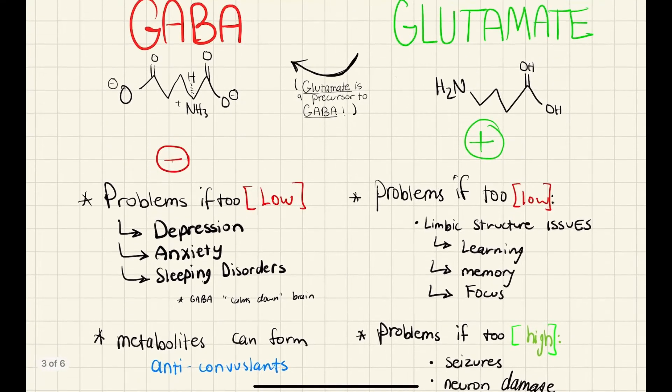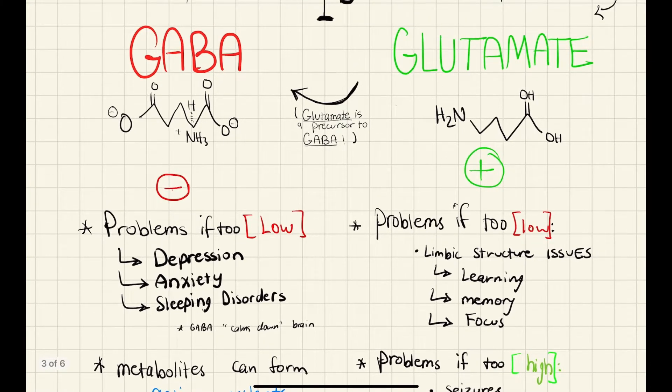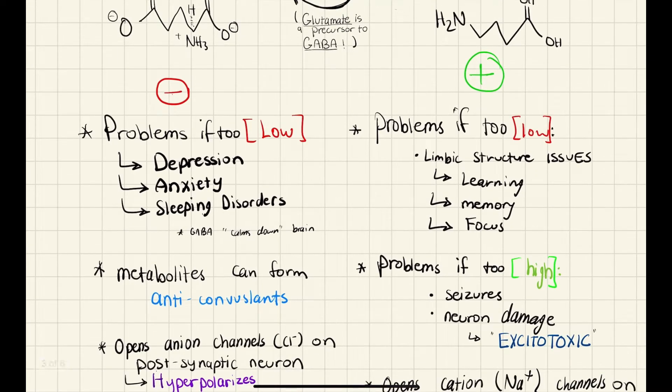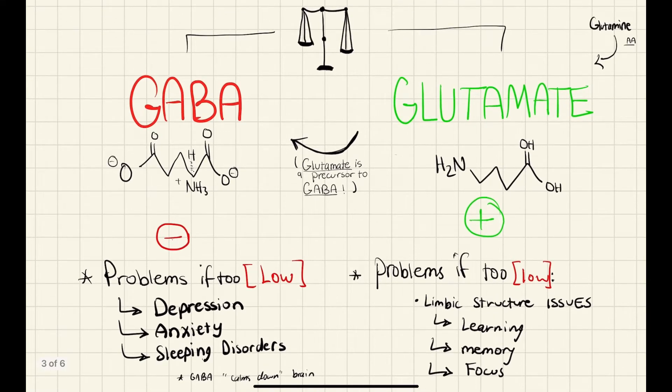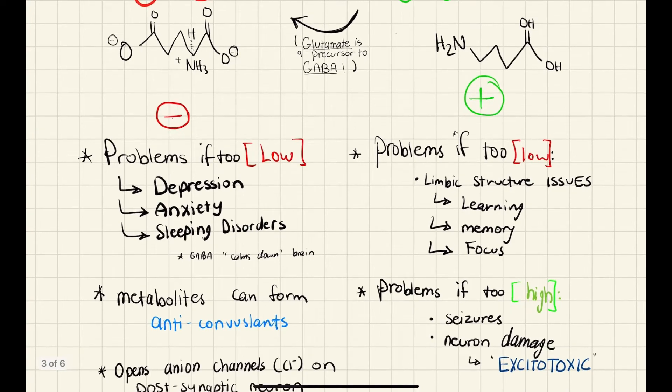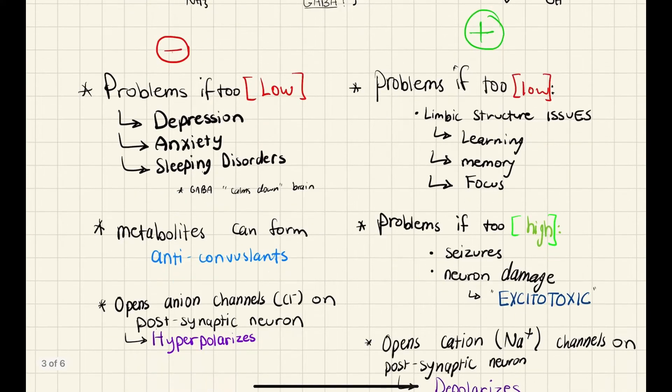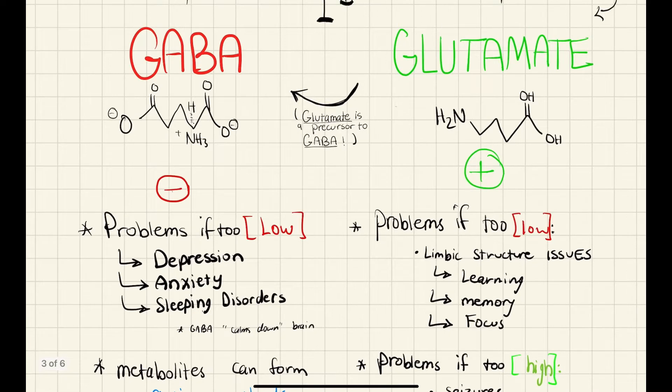Now, if you have too low glutamate, you could get limbic structure issues like issues with learning, memory, and focus. Because glutamate is essentially in the hippocampus for strengthening synapses in response to memory. But if it's too high, you can also get seizures or neuron damage, which is excitotoxicity, which I will explain more about in a future video. But it basically causes too much excitement. On the other hand, GABA, which is actually produced from glutamate through glutamate decarboxylase, is an inhibitory neurotransmitter. What that does is that it opens anion channels, like chlorine channels, on the postsynaptic neuron, which hyperpolarizes it. And if you have too low, you could get conditions like depression, anxiety, or sleeping disorders.